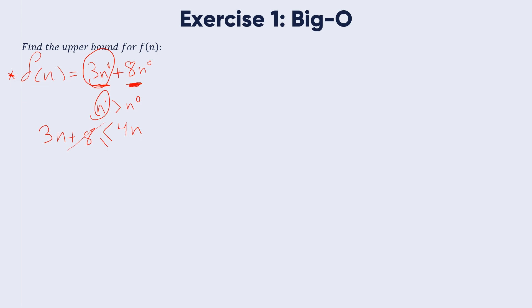If we neglect 8, then 3n is less than or equal to 4n, which is true. We remove the constants, so the Big O notation is O(n) for 3n plus 8, with c equal to 4 and n₀ equal to 8.